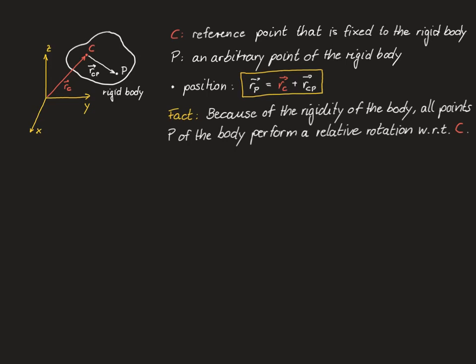For the velocity formula, we use the fact that because of the rigidity of the body, all points p perform a relative rotation with respect to c. This can be shown from the axioms of a rigid body: the distance between c and p cannot change, so p can only move perpendicular to the vector rcp — which is a rotation about c.